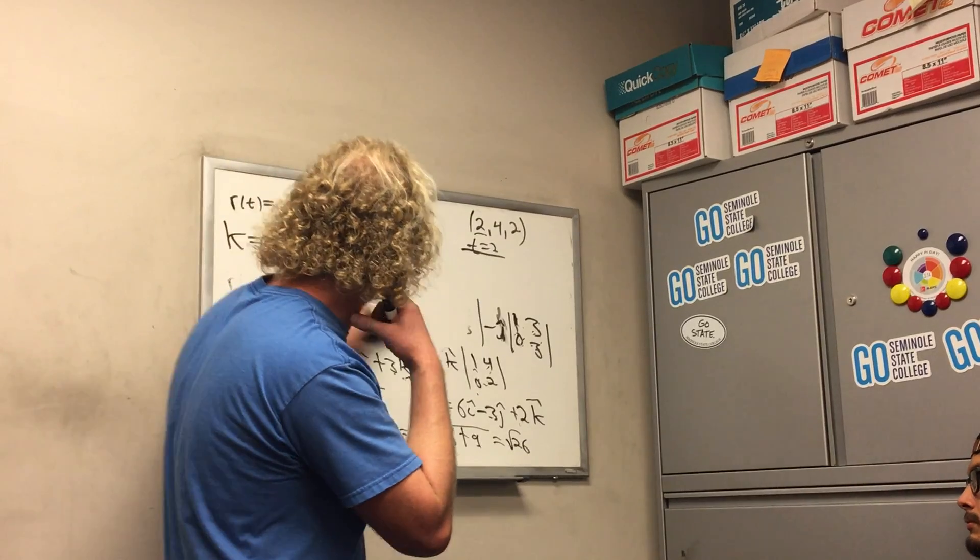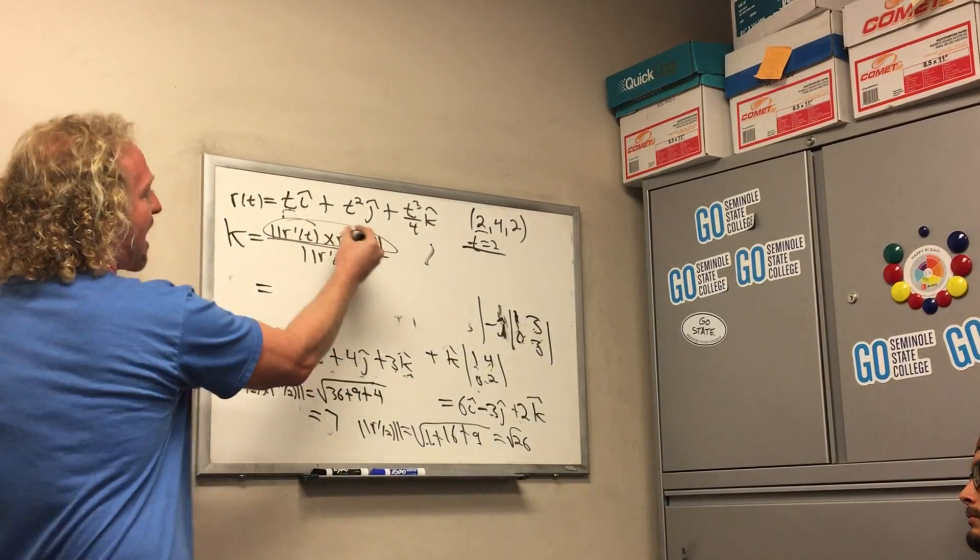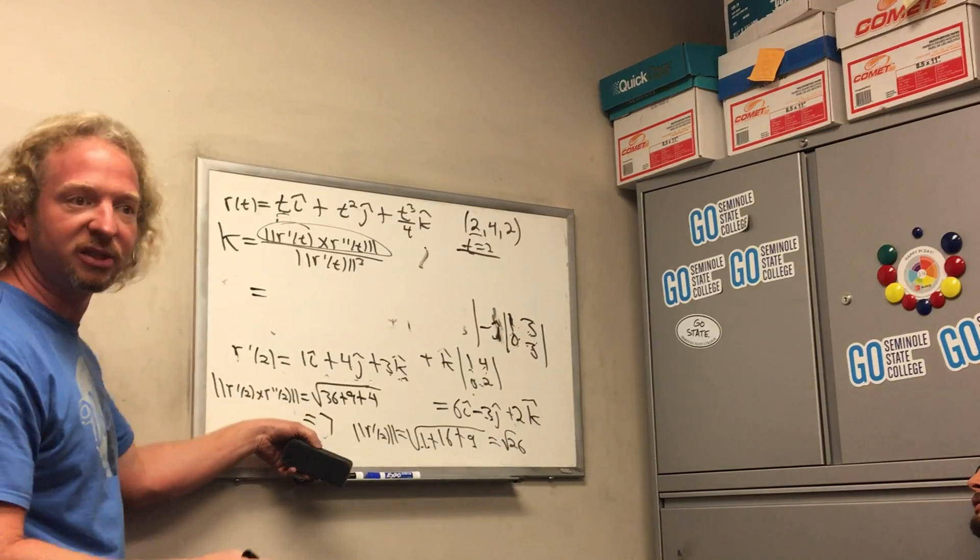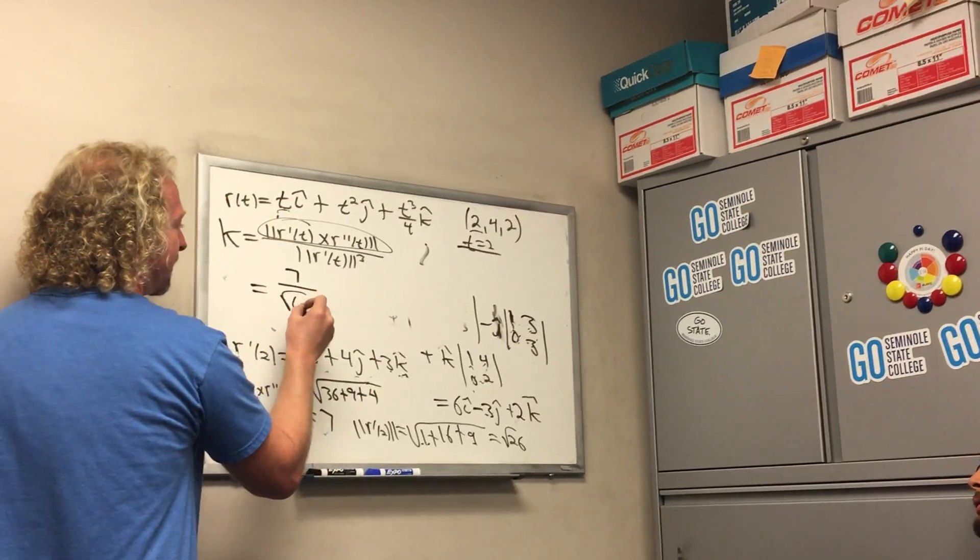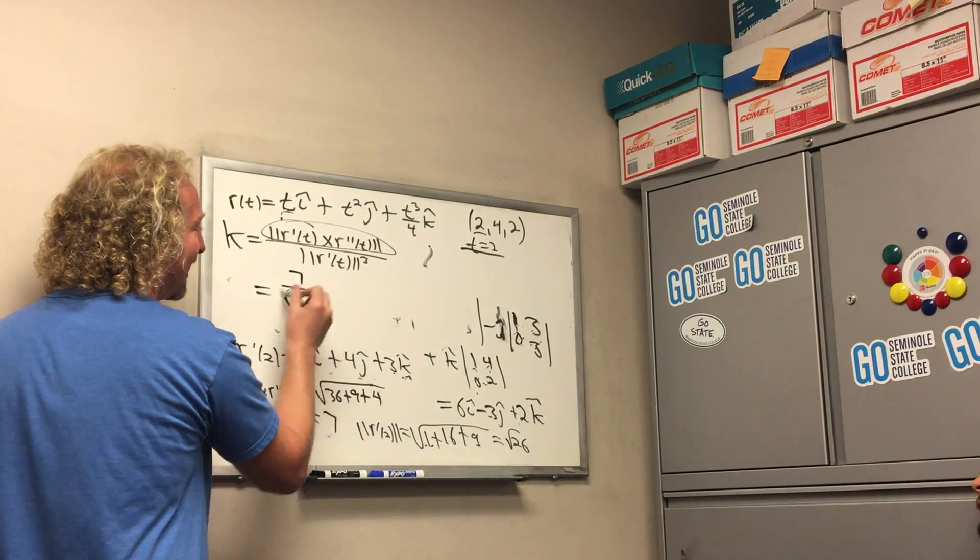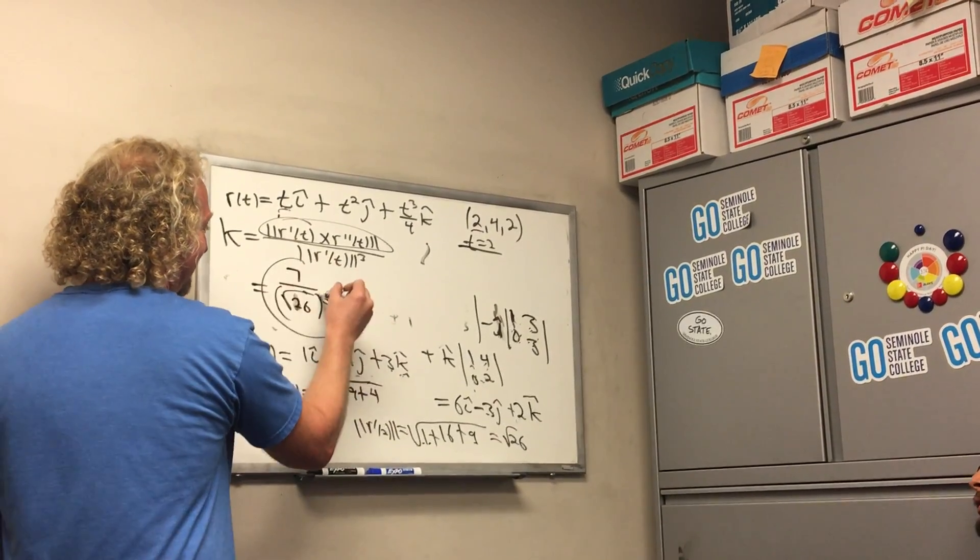So the final answer, erasing all this. So it's this magnitude up here, which is 7, over the square root of 26. And rationalize that? No, it's not, but you can. You don't have to rationalize that. And that's it.